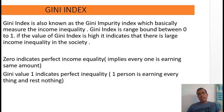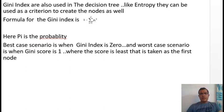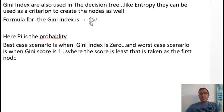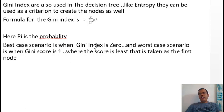Gini index is used in decision trees like entropy — they can be used as a criterion to create nodes. The formula I will be using is: 1 minus summation (i=1 to j) of p_i squared, where p indicates your probability. The best case scenario is when your Gini score is 0 and the worst case scenario is when your Gini score is 1. Where the score is least, I will make my first split in the decision tree.